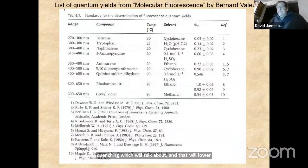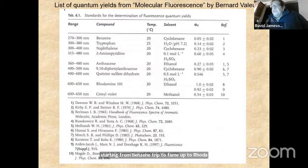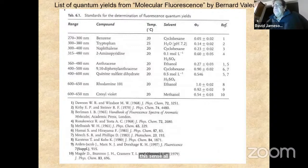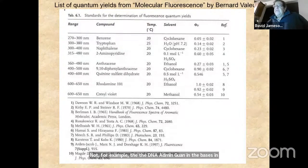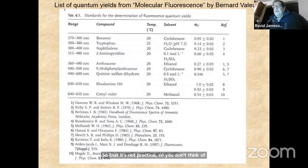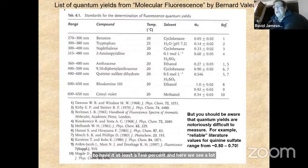This table from Bernard Valeur's excellent book on fluorescence shows the quantum yield for a number of compounds, from benzene and tryptophan up to rhodamines. The quantum yield varies greatly and ultimately determines if a molecule is a useful fluorescent probe. For example, the DNA bases adenine and guanine technically fluoresce, but the quantum yield is extremely low, so they're not practical. You need at least a few percent. Rhodamine 101 can reach 100%.